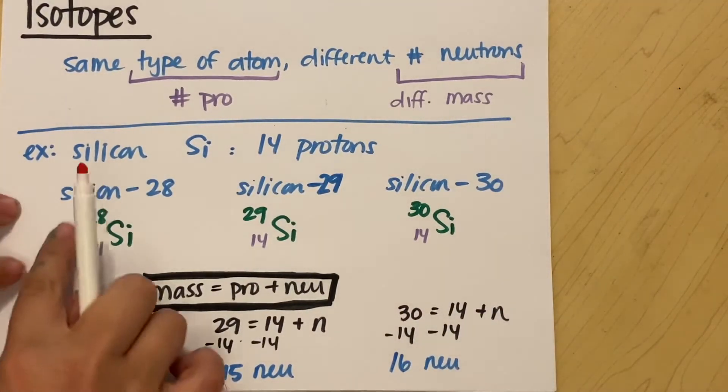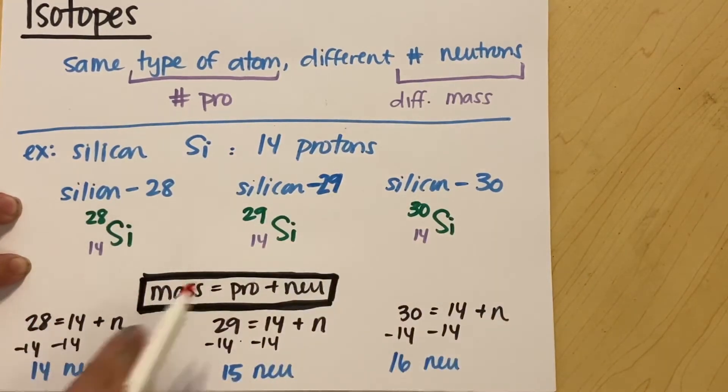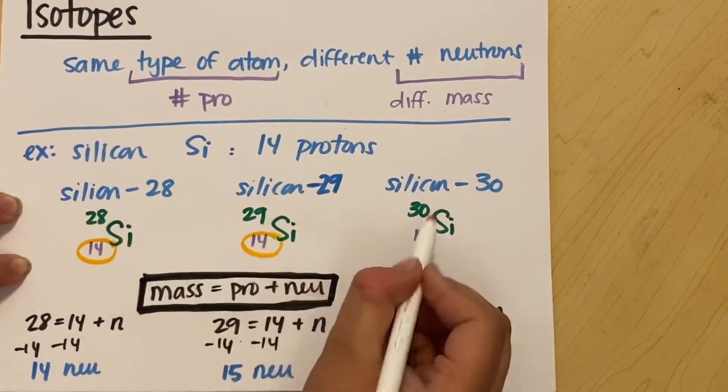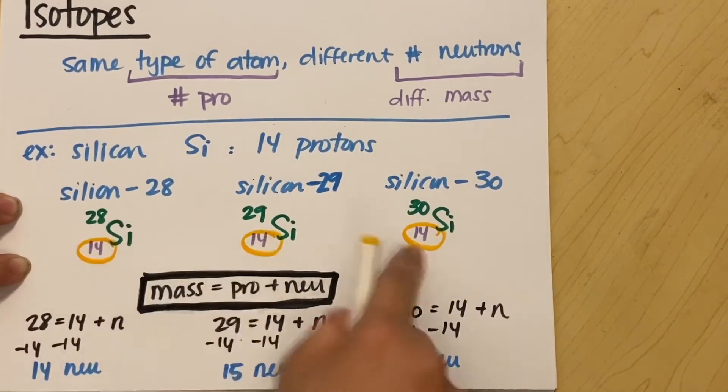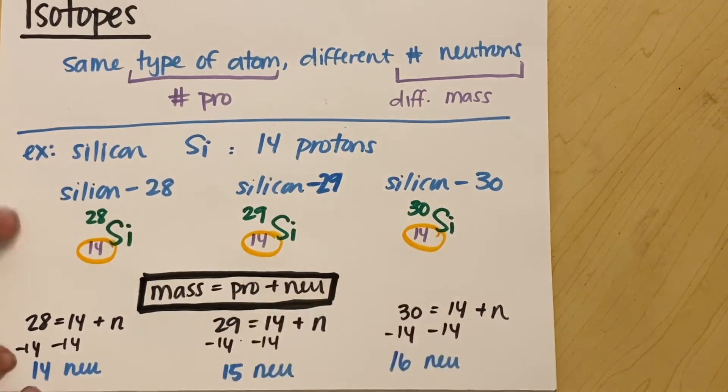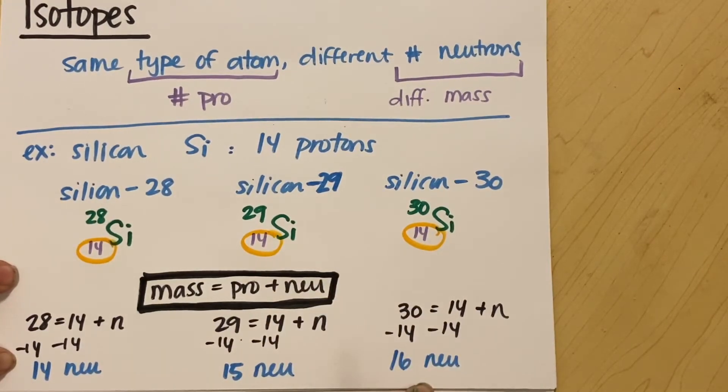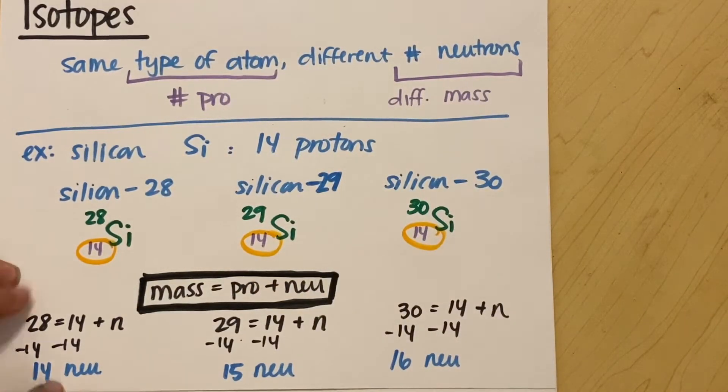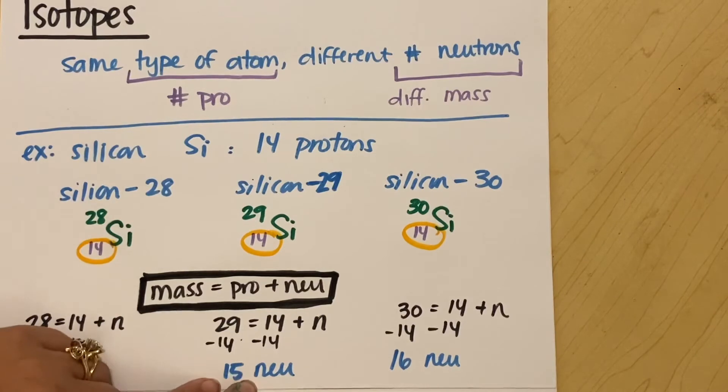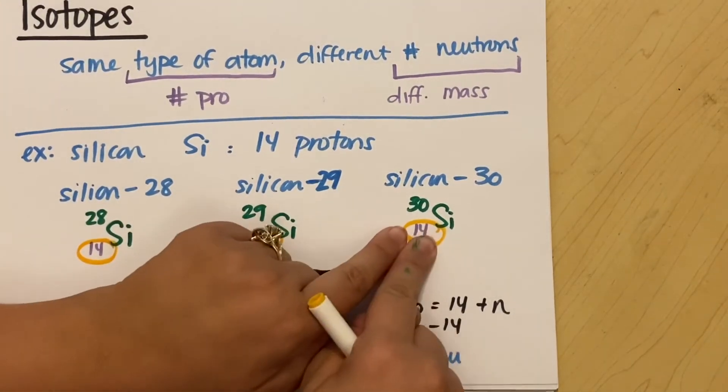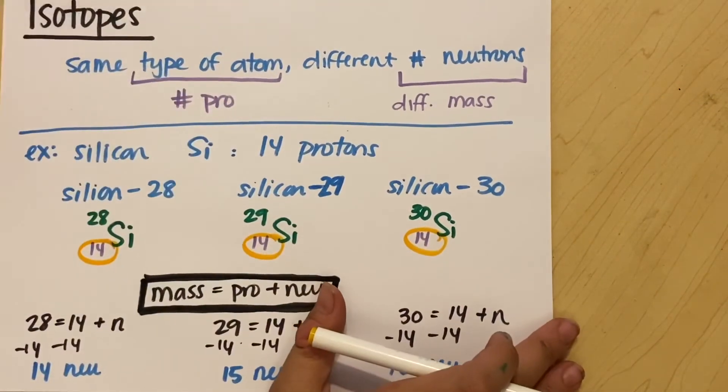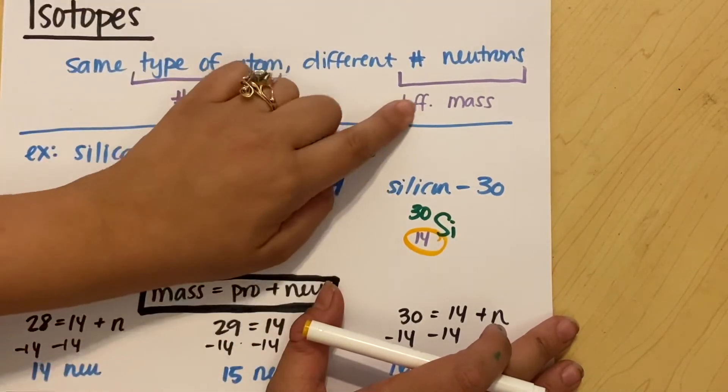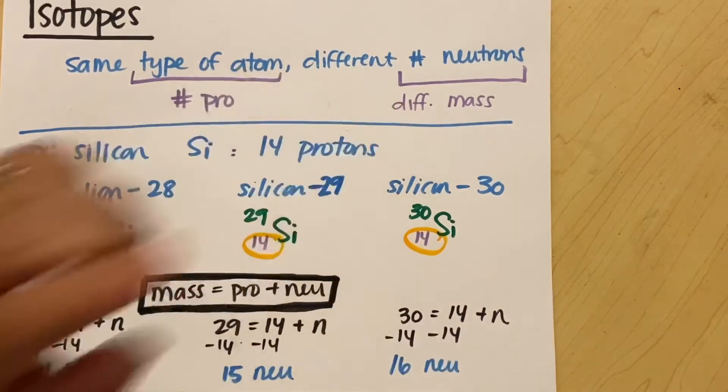So all of these three different isotopes they're all still silicon, right? Every single one still has 14 protons, but each one has a different number of neutrons. And having a different number of neutrons changes the mass number. So 14 neutrons gives me 28 mass, 15 neutrons 29 mass, 16 neutrons 30 mass. So the only thing that an isotope does is it changes the number of neutrons, which in turn changes your mass number.